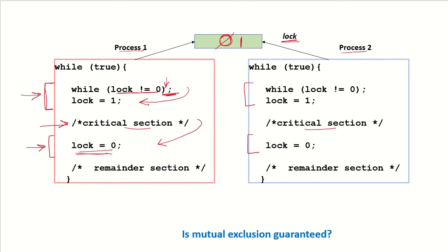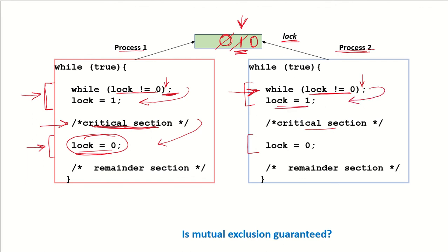Now suppose process P1 is in the critical section — it has acquired the lock, changed its value to 1, and is working in the critical section. Another process P2 now also wishes to enter the critical section. It will execute the instruction: while lock not equal to 0, keep spinning. Since the lock value is 1, process P2 will keep looping in the while loop. Only when P1 releases the lock and the value becomes 0 will process P2 be able to exit the while loop, change the value of lock to 1, and enter the critical section.